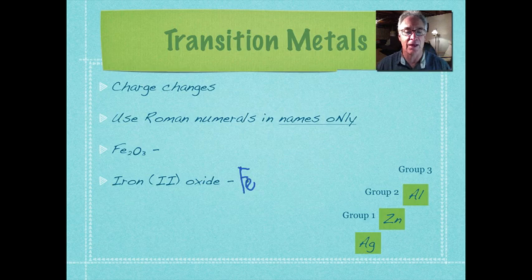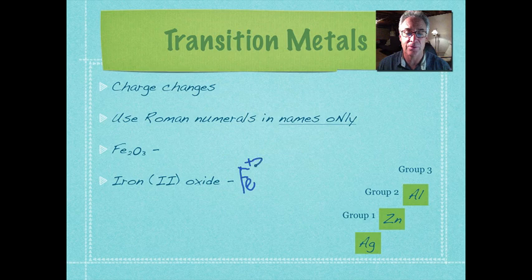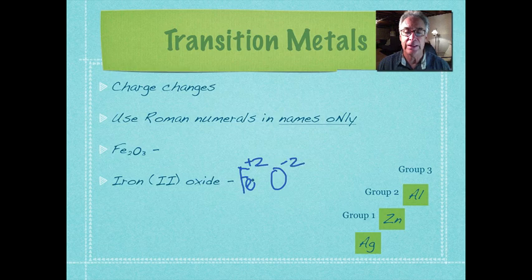And then in this particular case, it's going to say what we want. We want plus, is it plus two or is it plus three? But in this case, because it's two, it's plus two. And then, of course, we have oxide, and that's minus two.